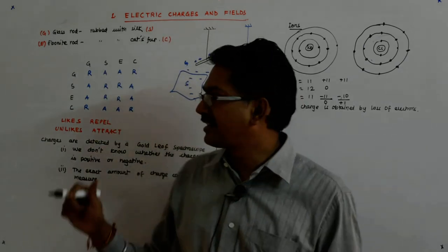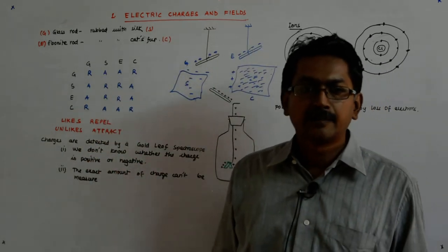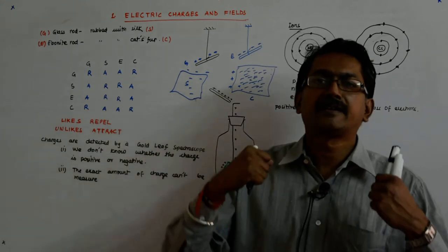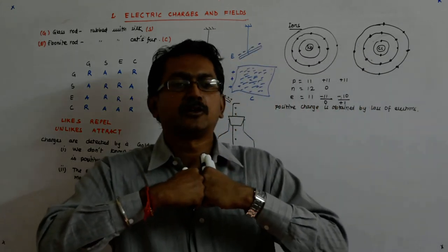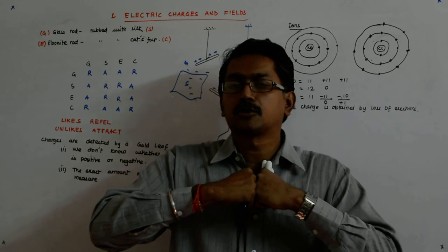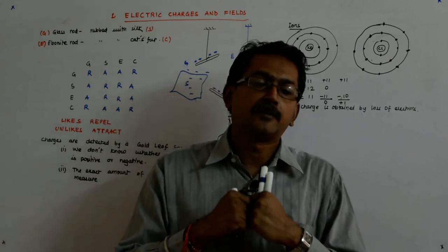These are short-range nuclear forces which come into operation if two particles come closer than a femtometer, 10 to the power minus 15 meters. They start getting attracted irrespective of their charges.